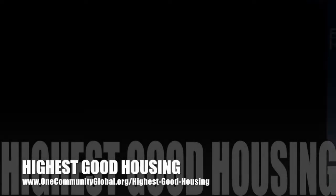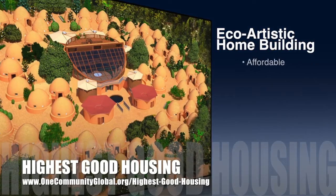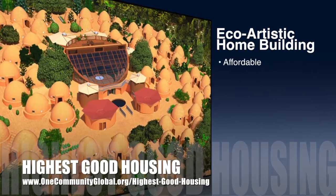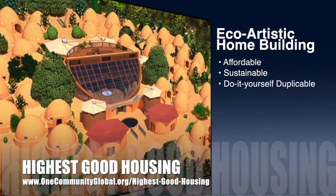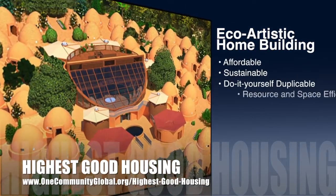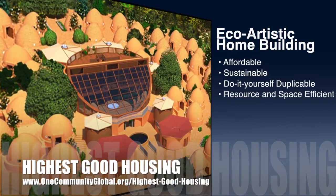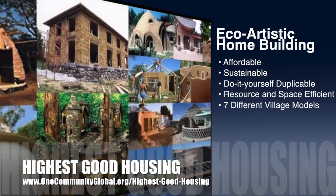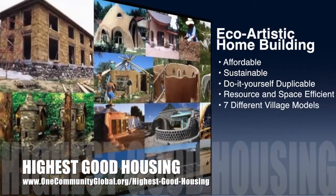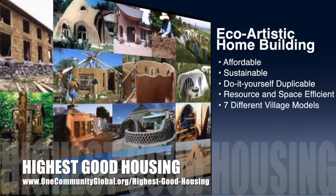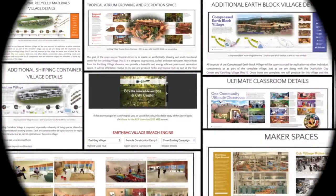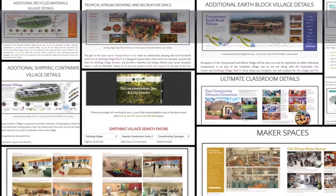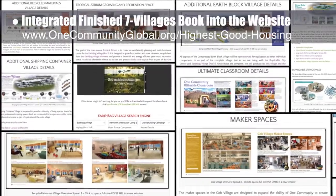One Community's approach to highest good housing is eco-artistic home building that is affordable, sustainable, do-it-yourself, duplicable, resource and space efficient, and consists of seven different sustainably constructed village models. This week the core team integrated the finished Seven Villages book into the website and updated all the village pages with new graphics and downloadable PDFs.